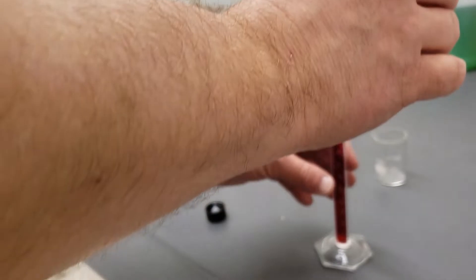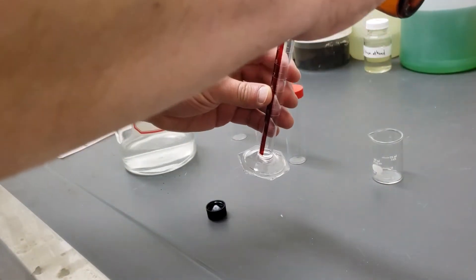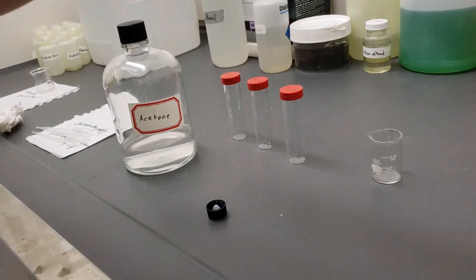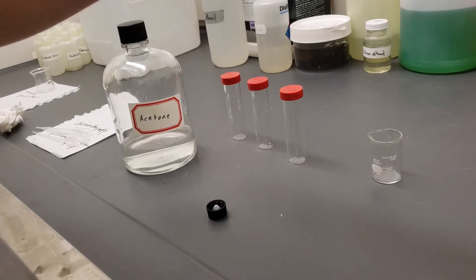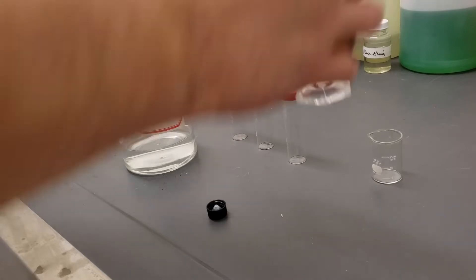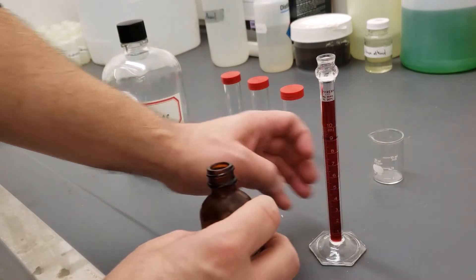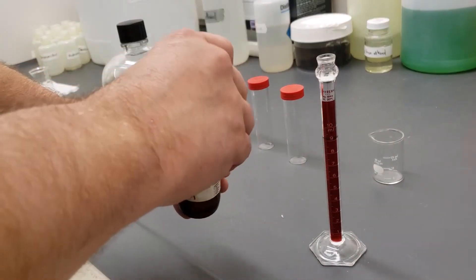I'm going to pour the petroleum ether into the graduated cylinder to nine milliliters. So I've got nine mils of petroleum ether.